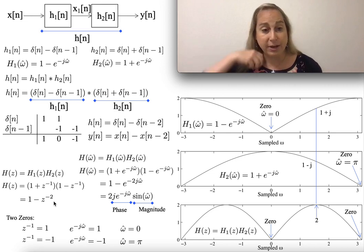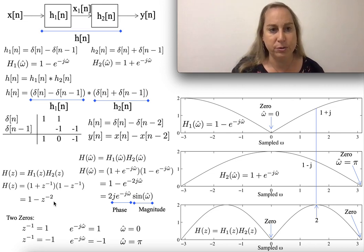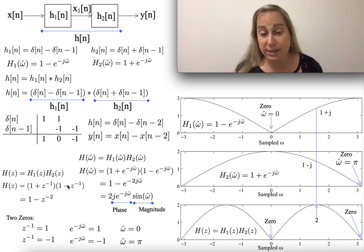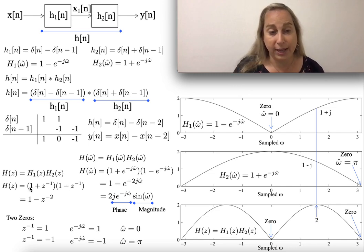So in the first one, h1, I'm going to have one zero at basically z-1 equal to 1. The other one, I'm going to have it as when it equals to -1. And so that's where the two of them would be.